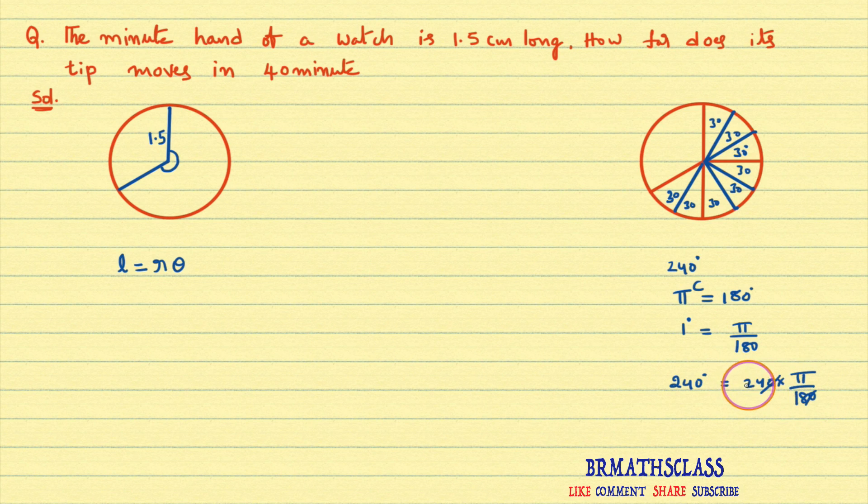240 degrees equal to 240 into pi by 180. Here 0 0 will get cancelled. 6 table: 6, 4 sir, 6, 3 sir. That equals 4 pi by 3. So 240 degrees is nothing but 4 pi by 3 radians. So what is this angle in 40 minutes? Minute hand makes 4 pi by 3 radians.